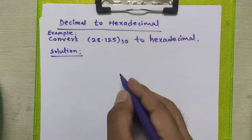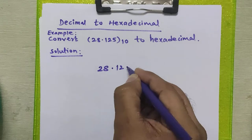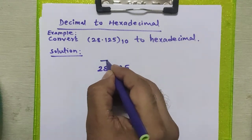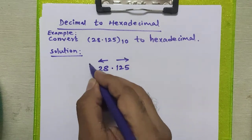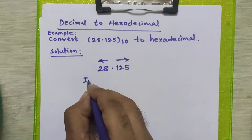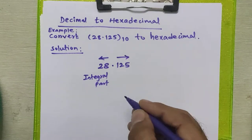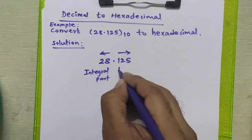The given number has two parts: one is called the integral part, which appears before the decimal point, and the part which appears after the decimal point is called the fractional part.